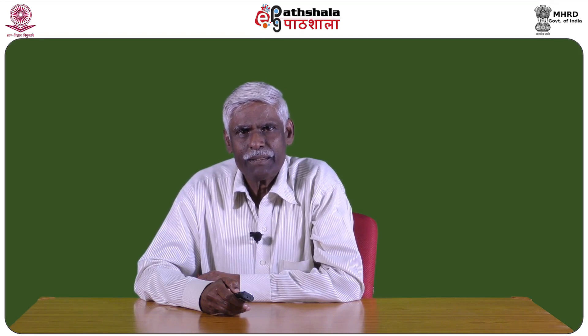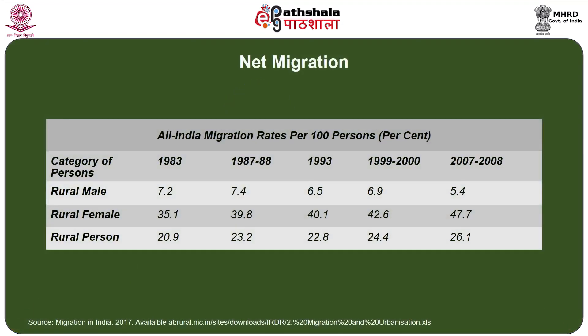One of the important contributing factors for urban population is migration, wherein migration as a component of population growth indicates the extent of people moving from rural areas to urban places. Looking at rural-urban migration rates, there is a slight increase in rural female migrants, where in 1983 the percent share of female migrants was 35.1, and the latest figure of 2007-2008 indicates that almost half of the female population in rural areas can be declared as migrants, largely due to marriage and other reasons.